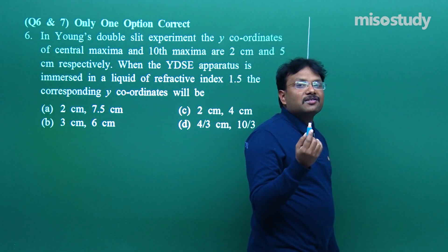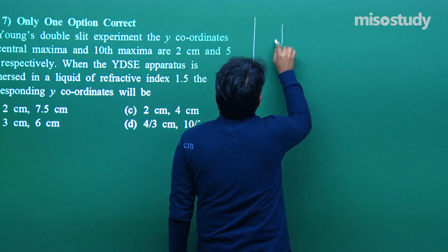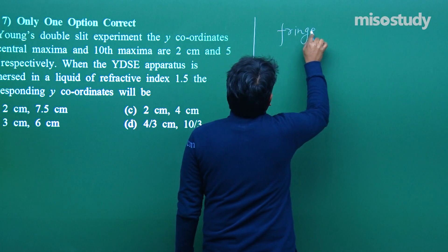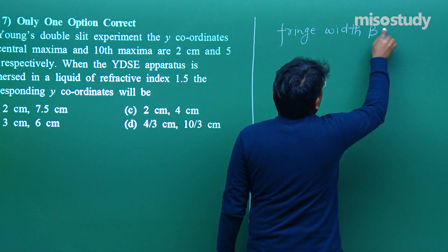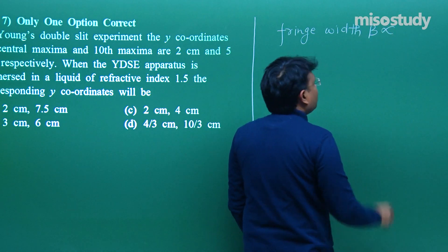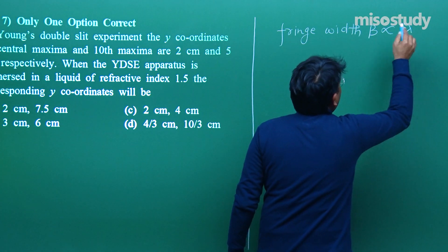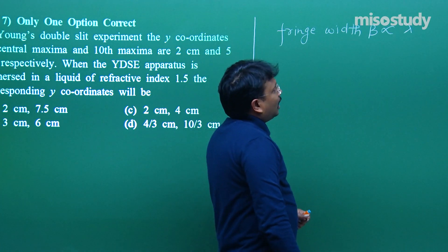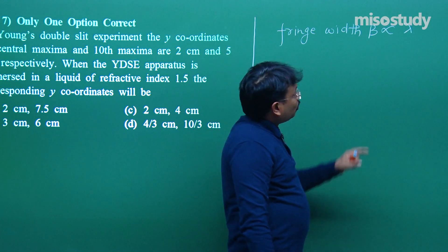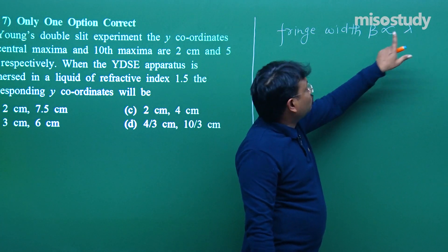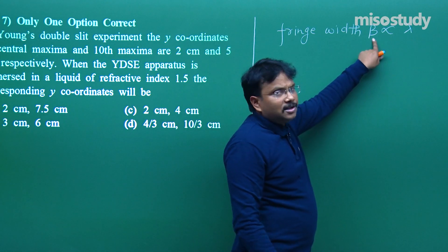Through small points, let's try to understand this answer. You have a formula for fringe width. Recall the formula: fringe width beta (β) is directly proportional to lambda (λ). If lambda increases, beta will increase. If lambda decreases, beta will decrease — it's a direct and simple relation.